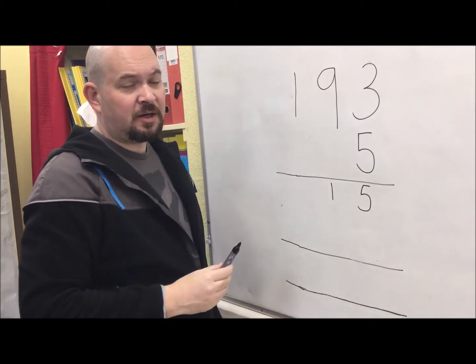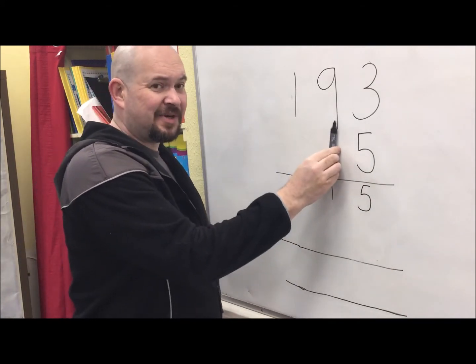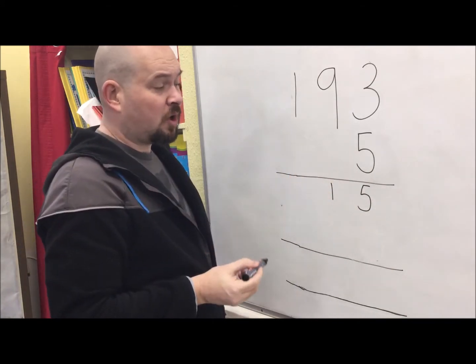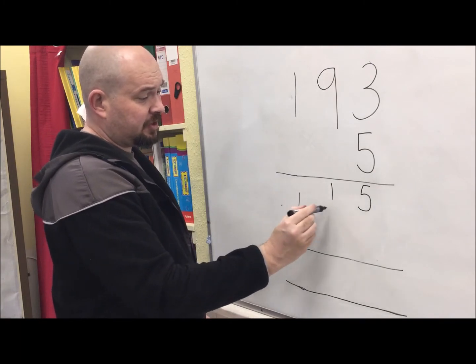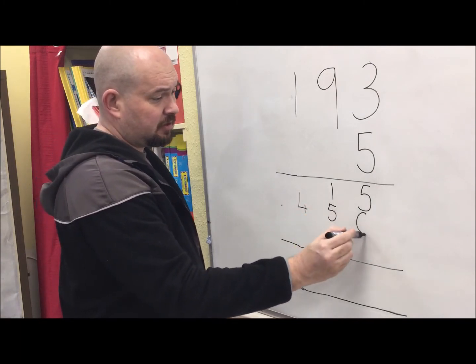5 times 9, I know that's 45, but don't forget it's not 9, it's 90. So it's 450, ten times bigger. Hundreds, tens and ones.